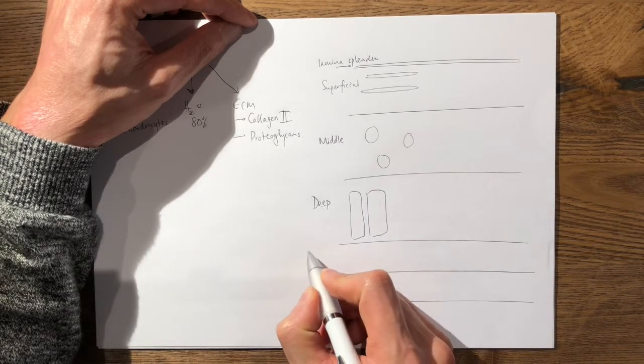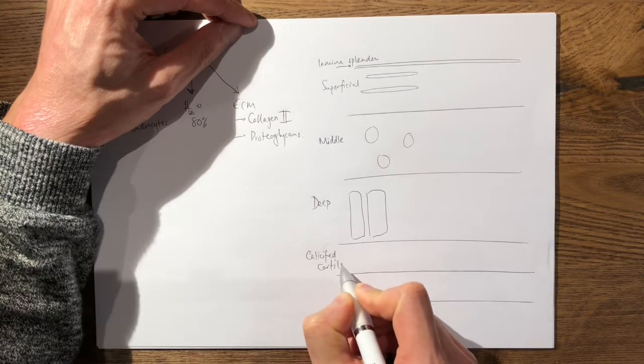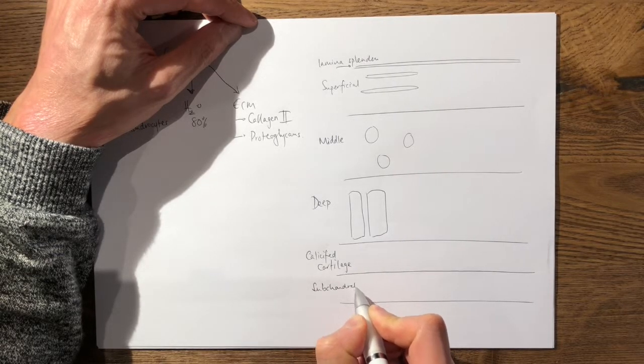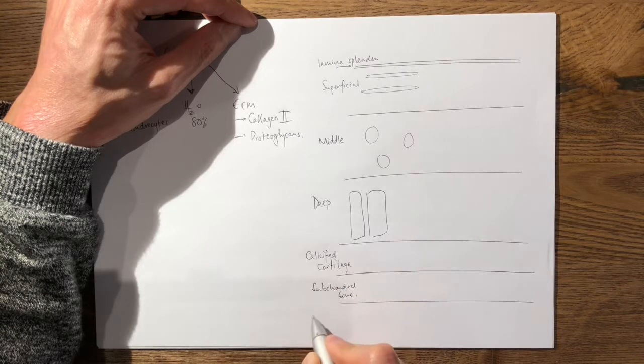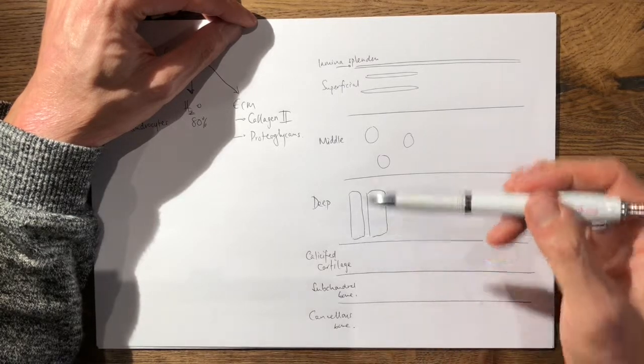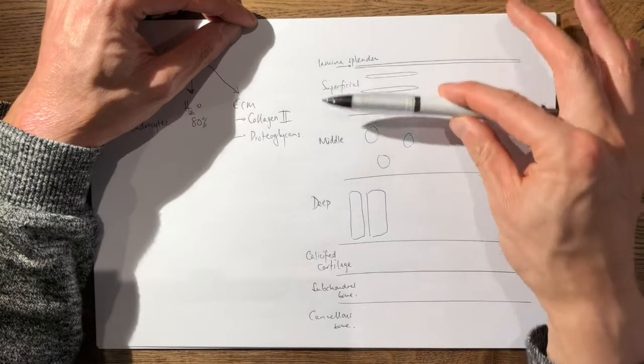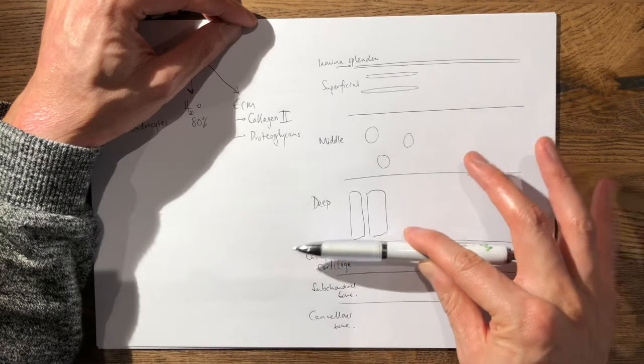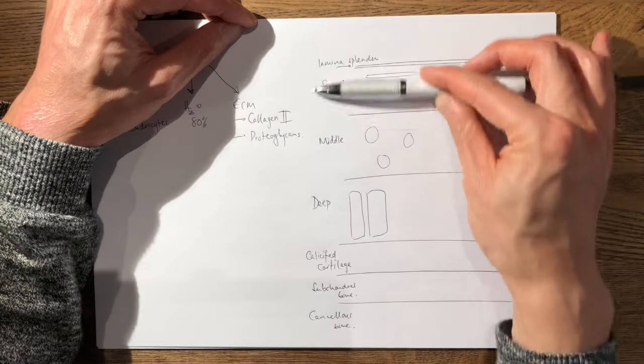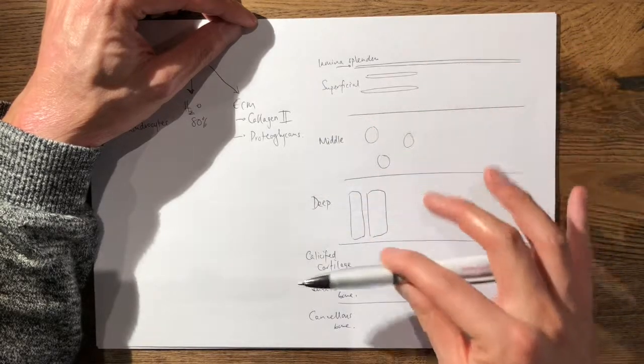Here you have the calcified cartilage layer. And here you have the subchondral bone. And then underneath subchondral bone, you have the cancellous bone. And the reason you have this transition is so that you do not have an area of stress or weakness. So there's a gradual transition of the tissue between cartilage down into bone. So the calcified cartilage layer really just anchors the cartilage onto the bone.